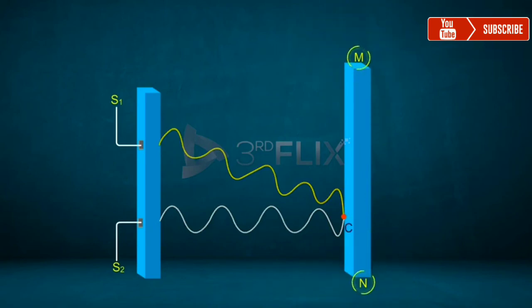The crest of the wave from S1 falls on the trough of the wave from S2. It leads to a destructive interference pattern, that is, the dark fringe on the screen.